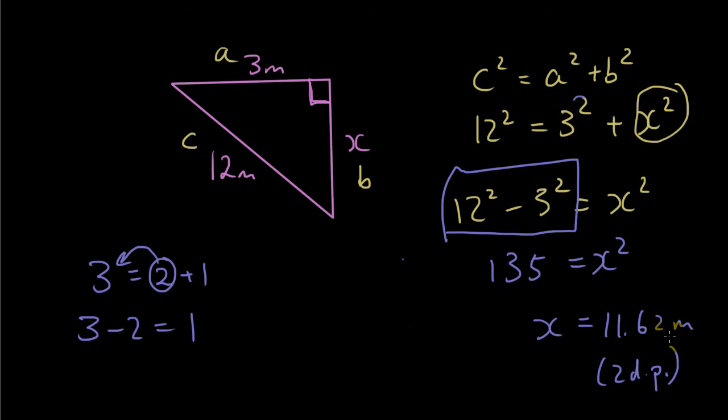Meters. Which makes sense because x is shorter than twelve, right? Because twelve is the longest. So we got x equals eleven point six two meters.